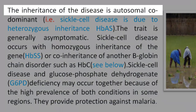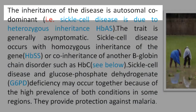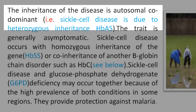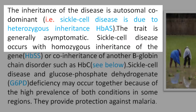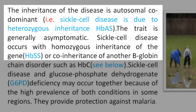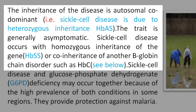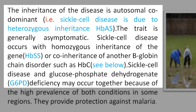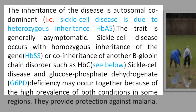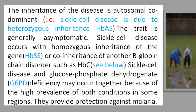Reading 2. The inheritance of the disease is autosomal codominant. Sickle cell disease is due to heterozygous inheritance. The trait is generally asymptomatic. Sickle cell disease occurs with homozygous inheritance of the gene, or co-inheritance of another B-globin chain disorder such as HBC. Sickle cell disease and glucose phosphate dehydrogenase deficiency may occur together because of the high prevalence of both conditions in some regions. They provide protection against malaria.